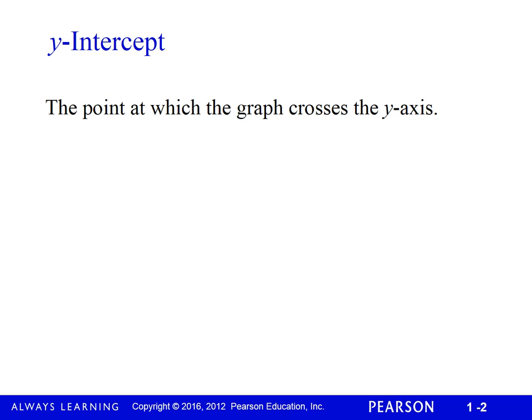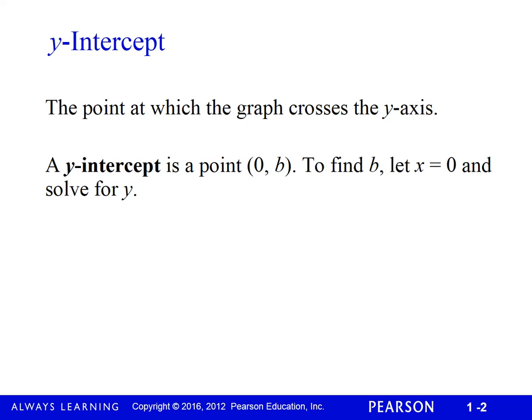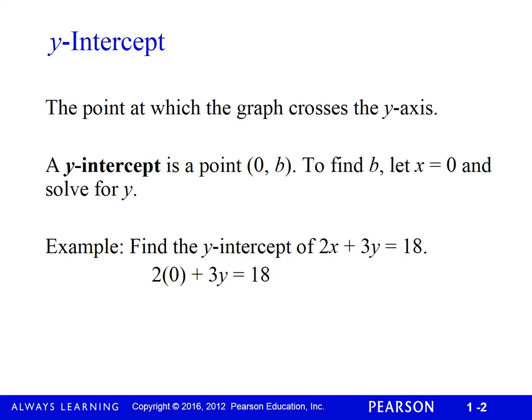Graphically, the y-intercept is the point where the graph crosses the y-axis or vertical axis. It's a point (0, b). Set x = 0 and solve for y. In the same equation, set x = 0, then 3y = 18. Divide both sides by 3, y = 6. So (0, 6) is the y-intercept.